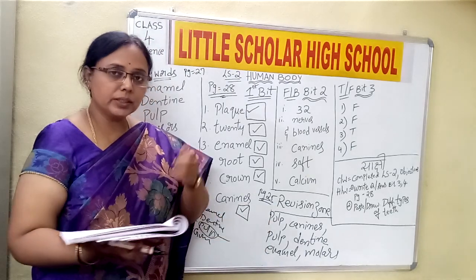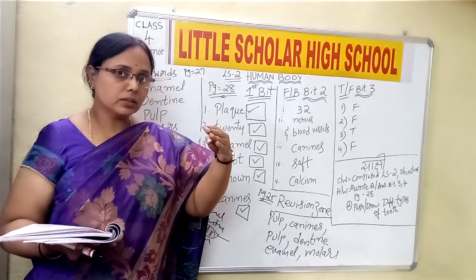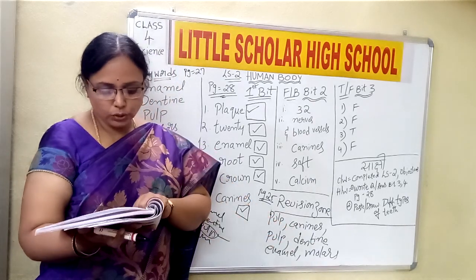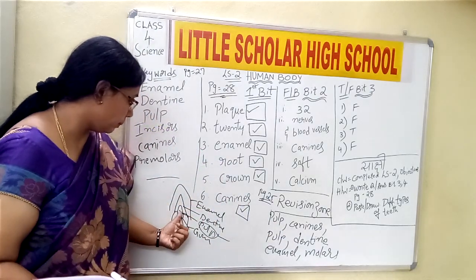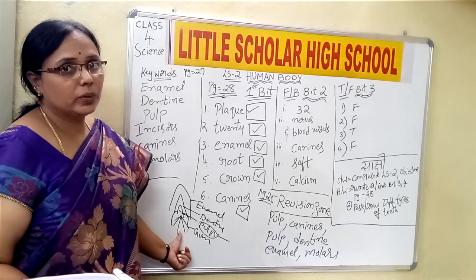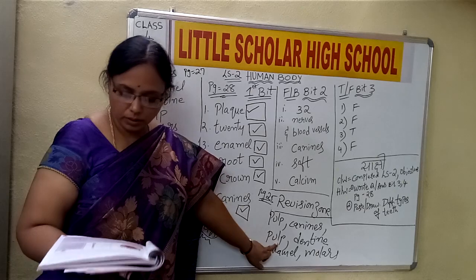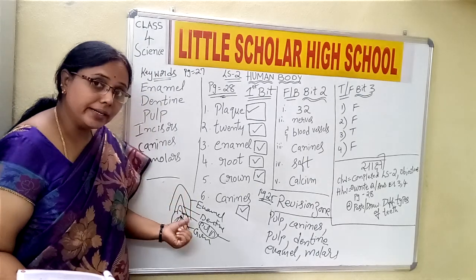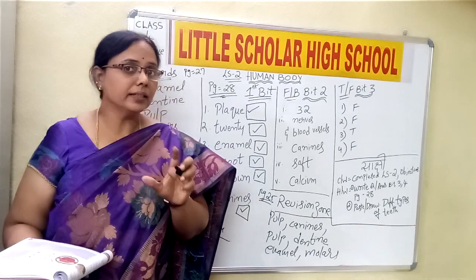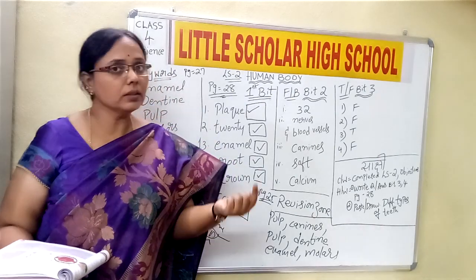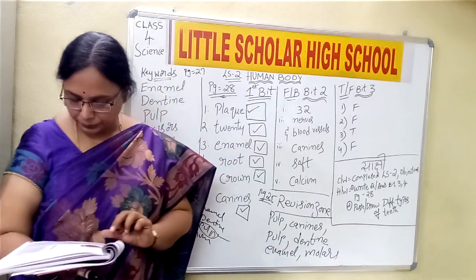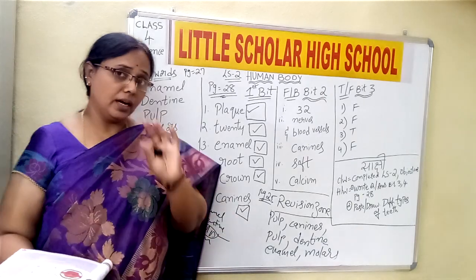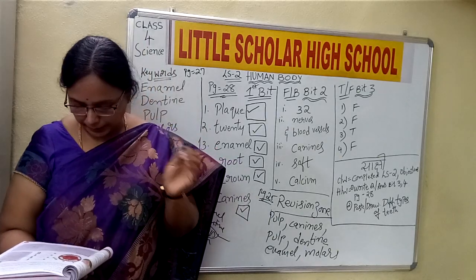Teeth that help in tearing the food — it is nothing but the canines. Canines are the second ones, after incisors come the canines. So canines help in tearing the food, so write canines. The part of the tooth that has nerves and blood vessels — it is the pulp, which is supplied with blood vessels and nerves. So the third answer is pulp again. The part of the tooth that is yellowish in color — after enamel we have dentine, which is the second layer, yellowish in color, hard in nature but not as hard as enamel. So it is dentine. The part of the tooth that protects it from decay — it is the enamel. Enamel is the outer layer, the hardest layer, protecting the tooth from decay.